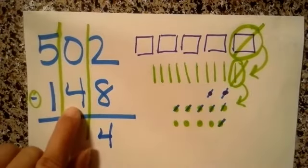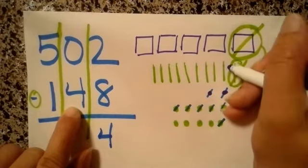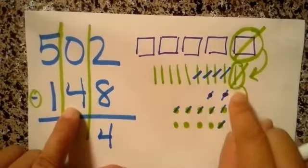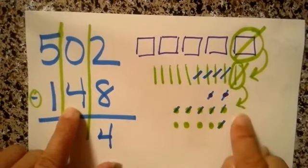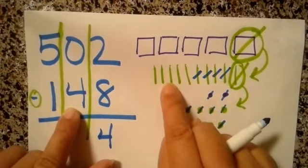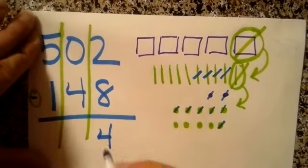All right. Now I'm crossing out four tens, four rods. One, two, three, four. Remember, I don't count that one because it's already crossed out. How many do I have left? One, two, three, four, five.